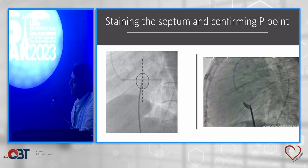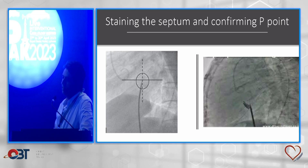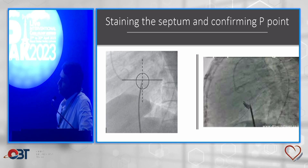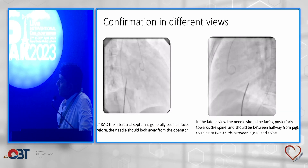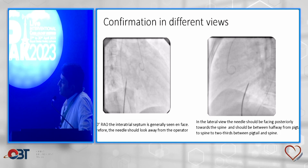After identifying the puncture P point, working in the AP view, we identify the intersection of the horizontal M line and vertical midline. There are different methods — some do it in RAO view — but what we do is the left lateral view. We inject some dye, create a stain, and identify the septum. This should be midway between the pigtail and the vertebra. In 30 RAO view, the interatrial septum is generally seen en face, so the needle should face away from the operator. In the lateral view, the needle should be facing posteriorly towards the spine and be halfway between the pigtail and the spine.